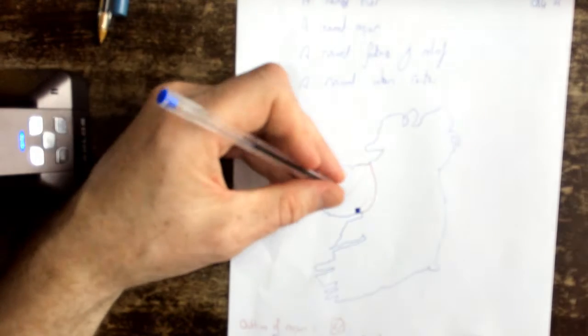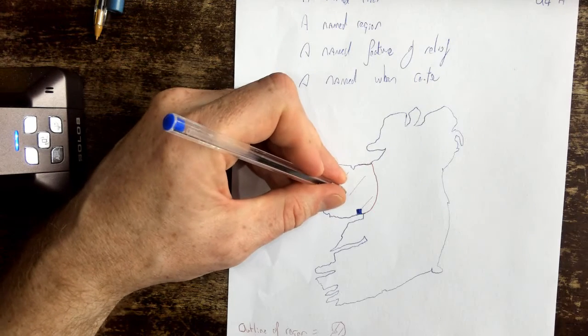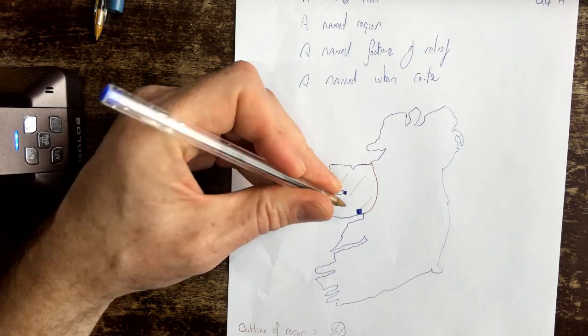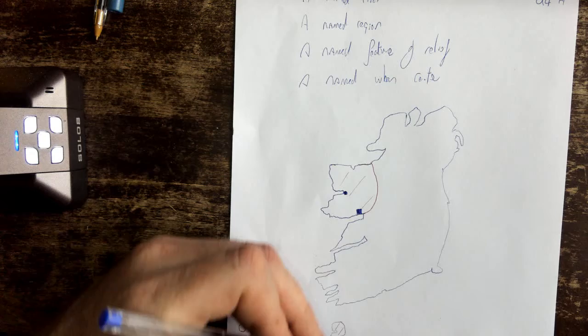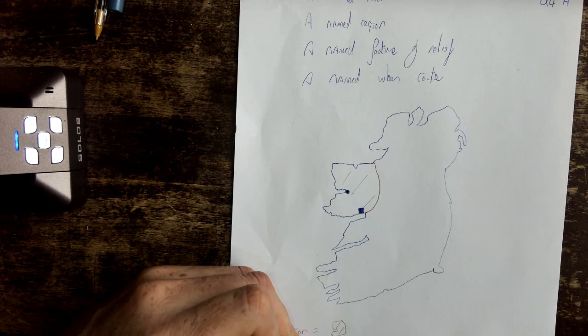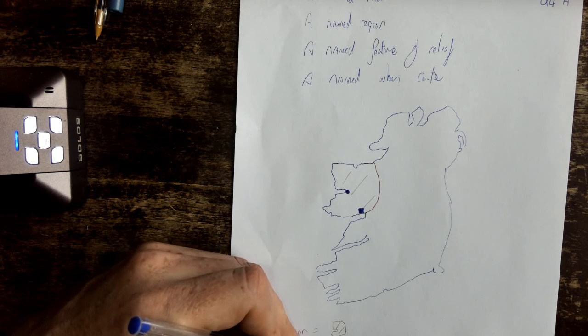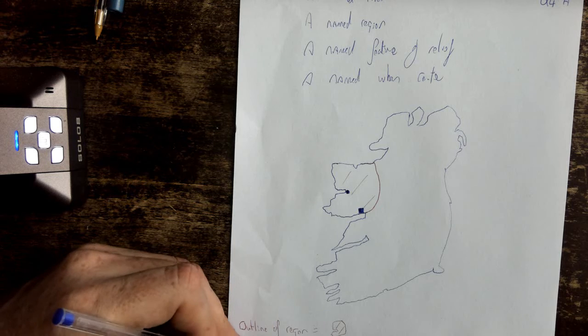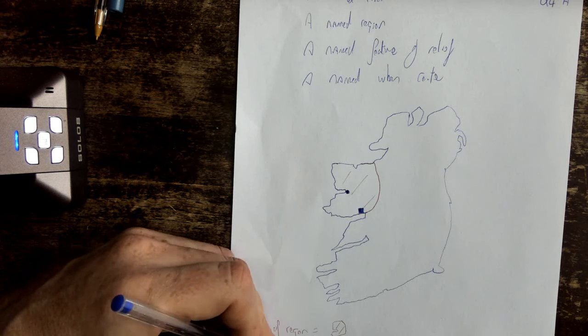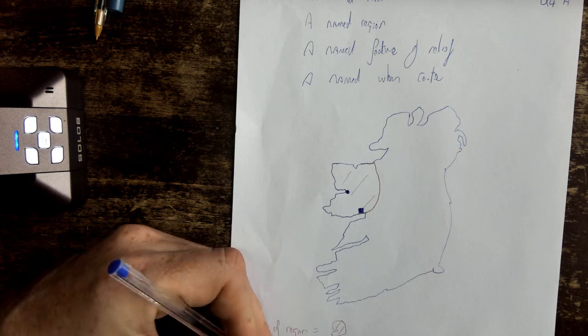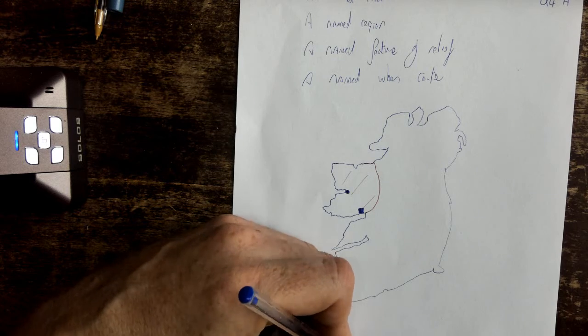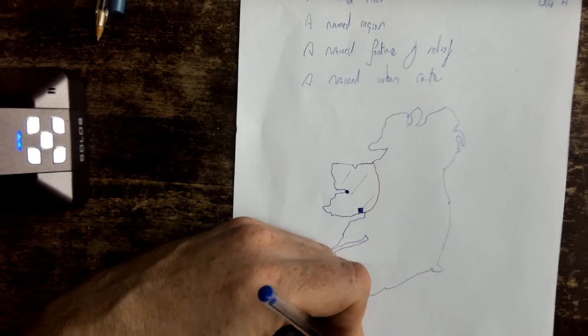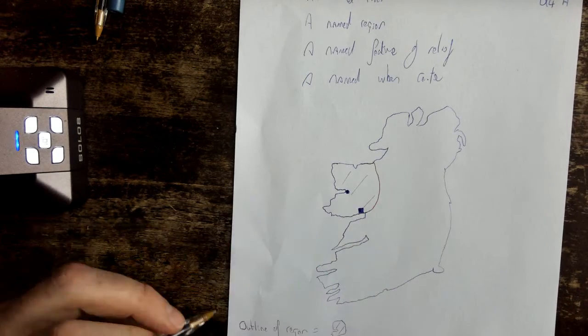I'll have a second urban centre and it's a smaller urban centre, so I'll give it a circle, and I'll call that urban centre Westport.